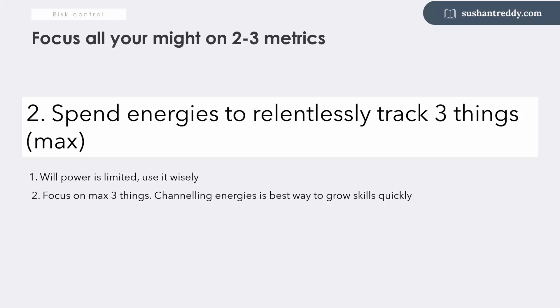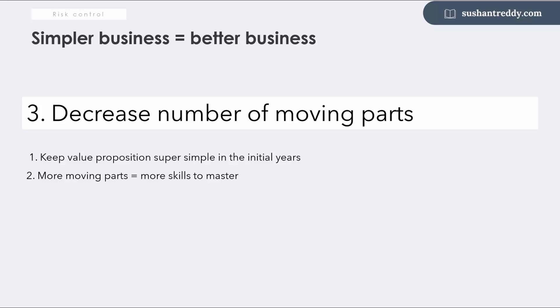Decreasing the number of moving parts in the business is the third factor. Keep your core value proposition as simple as possible. A complicated model increases the number of skills to master. More skills to master, slower will be the growth of the skills and greater will be the role of luck, especially in the initial years.